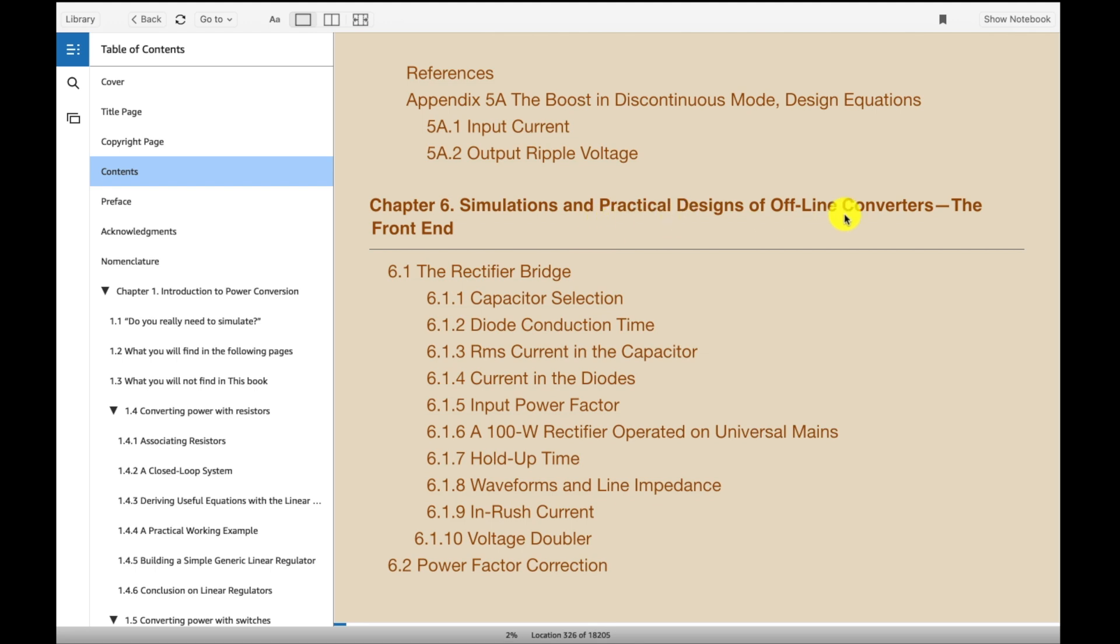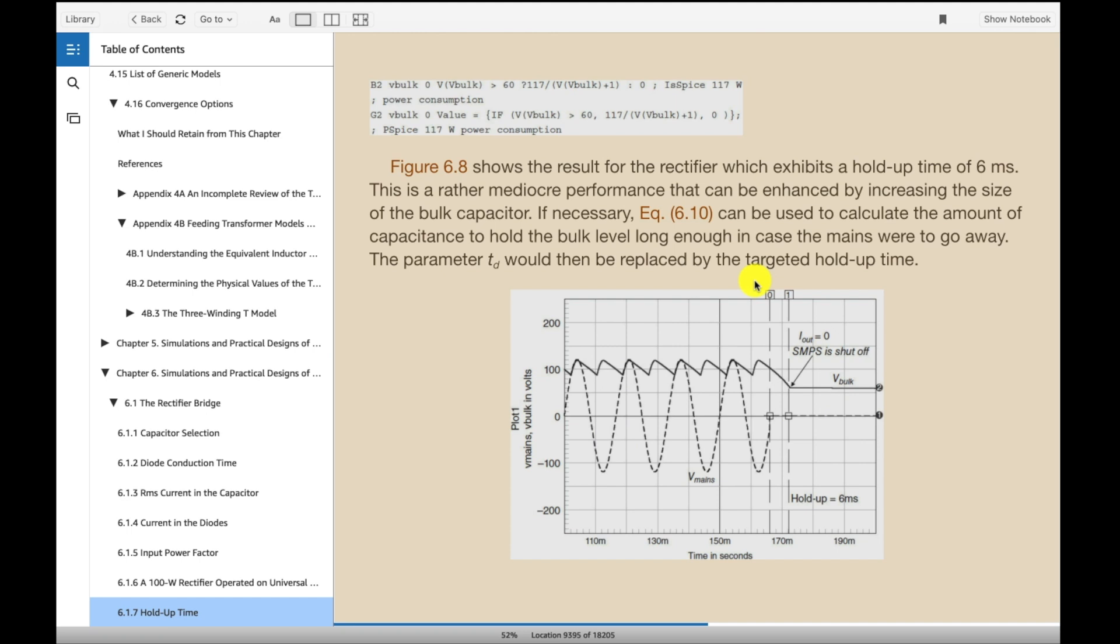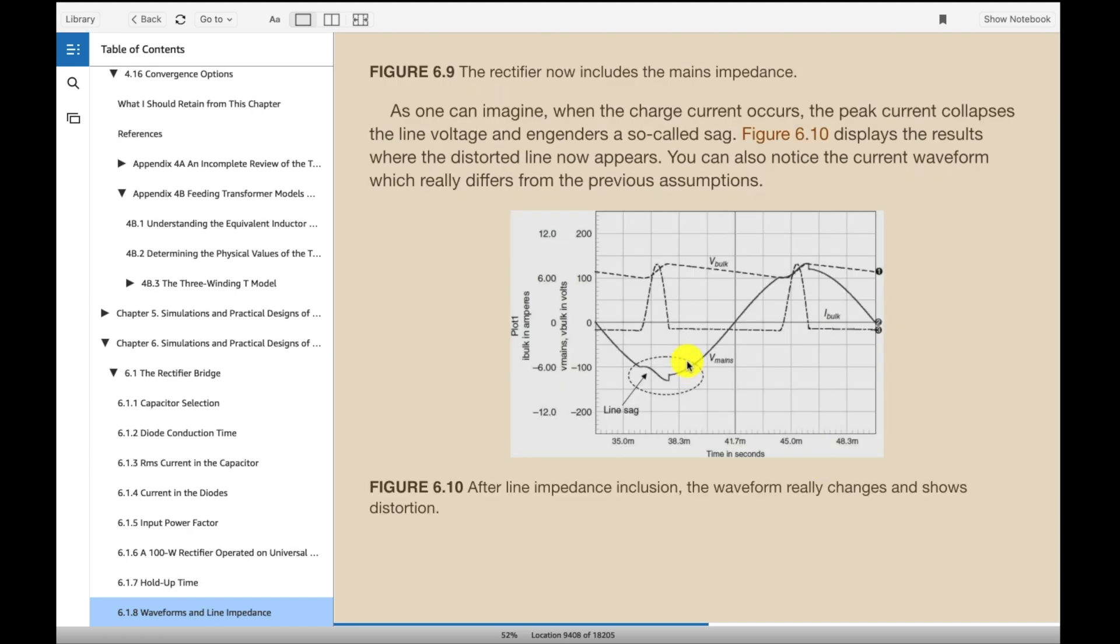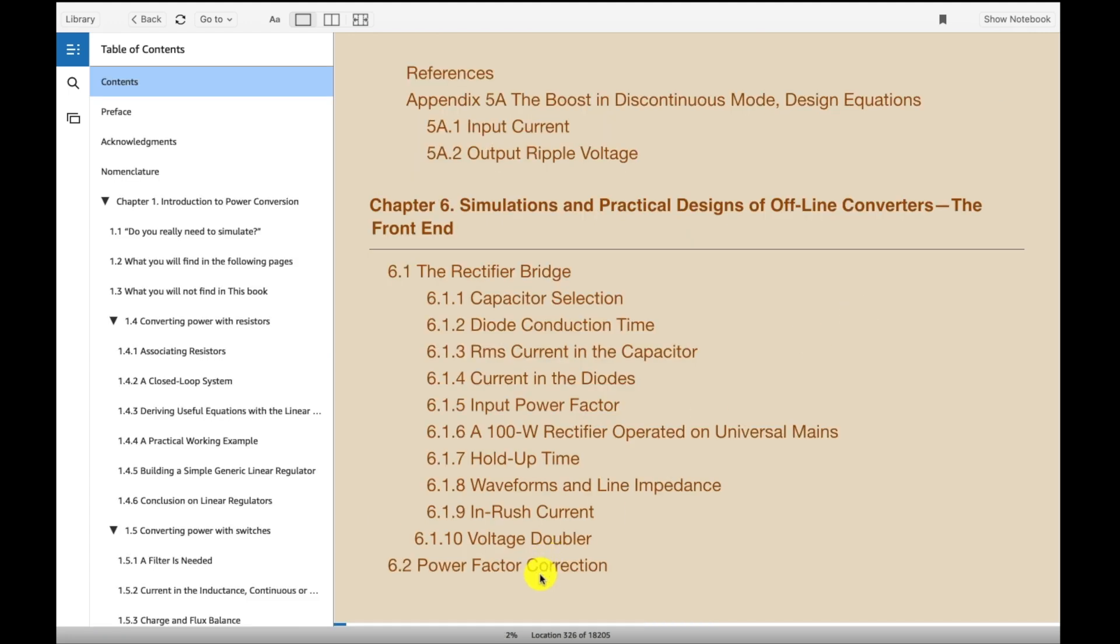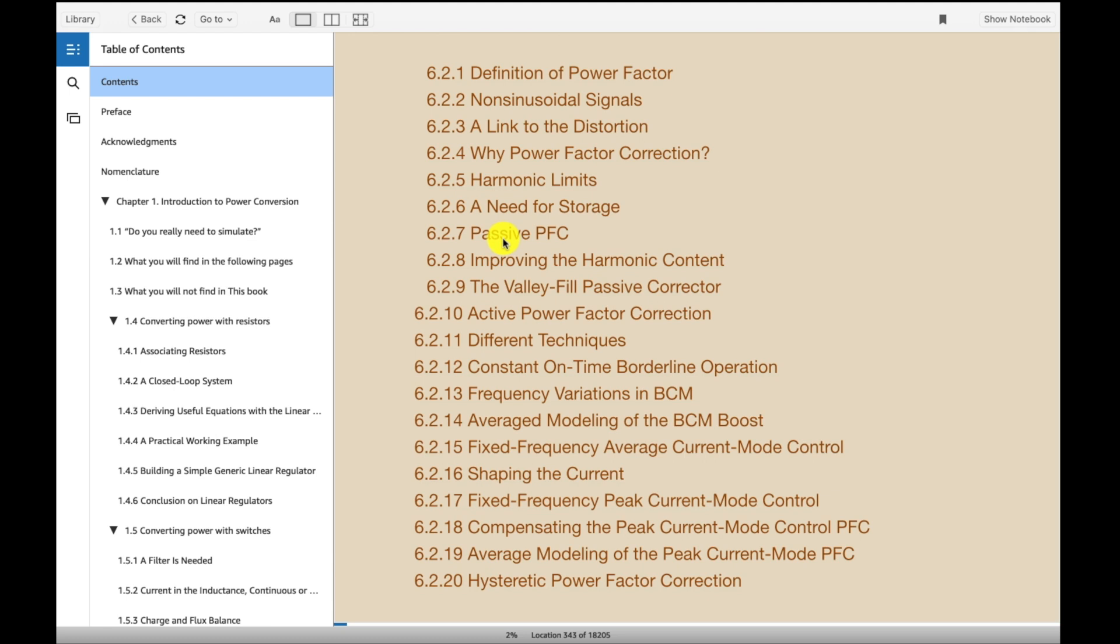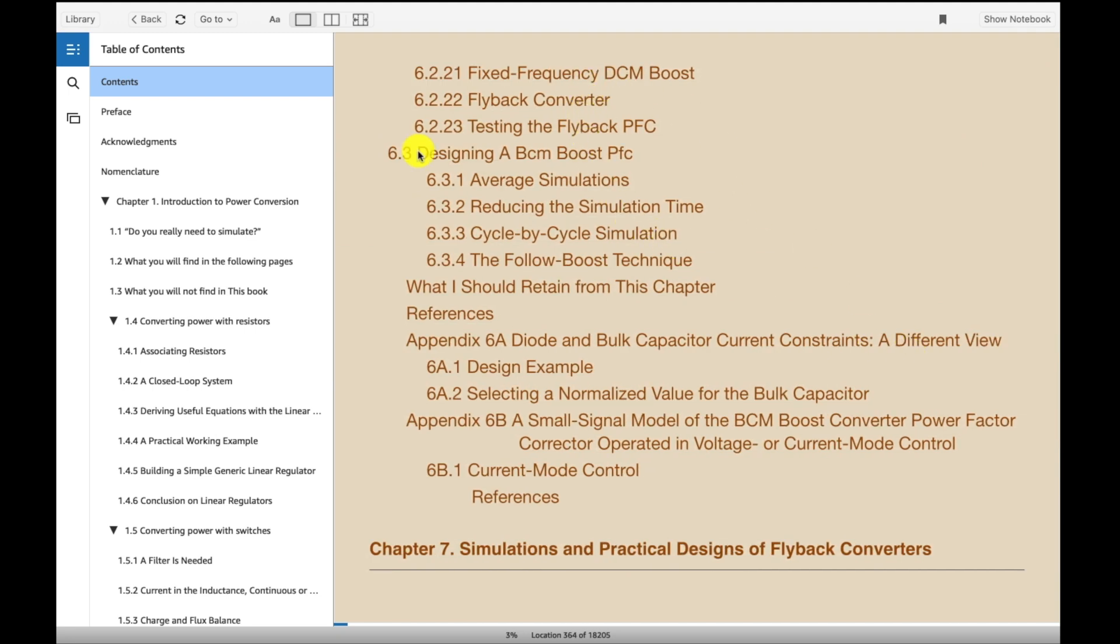Chapter 6, Use Simulations of Practical Designs of Offline Converters. So these can be isolated converters mostly. This is the front end actually, Chapter 6. So the bridge, the rectifier bridge. And it talks about capacitor and diode selection. Here's a holdup time. Let's just jump over to that. See a nice little diagram. And it shows how the simulation's set up and what it might look like. And down here at the bottom, Power Factor Correction. 6.2, second section. And there's even right here, Passive PFC. And down here at the bottom, Hysteretic Power Factor Correction. So you can see all the different subjects that are covered. 6.3 is Designing that BCM Boost PFC. And then we have the appendix, more examples.